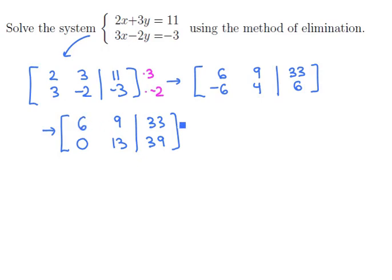Now note that every element in the first row is a multiple of 3, and every element in the second row is a multiple of 13, so we could scale down these two rows. Let's scale down row 1 by 1 third and scale row 2 by 1 thirteenth, and this will give us the matrix 2, 3, 11, and 0, 1, 3.